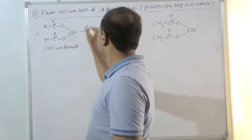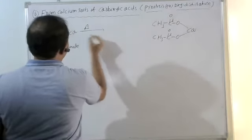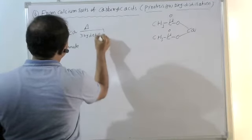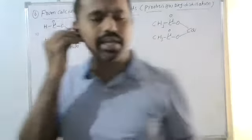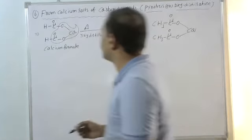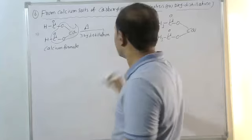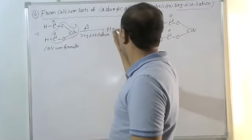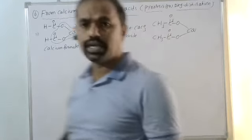When calcium formate is heated — that is called pyrolysis or dry distillation — it is decomposed. It decomposes into calcium carbonate (limestone) as a byproduct. The remaining product is HCHO — that is H-C-H=O — which is formaldehyde, methanal.